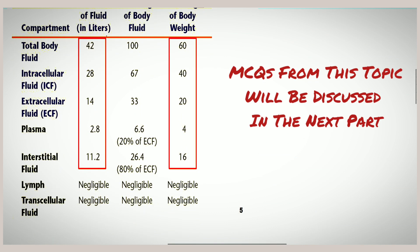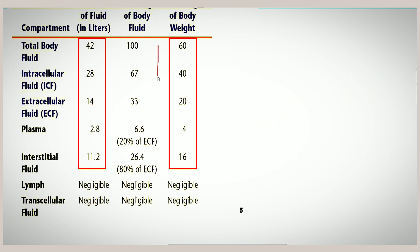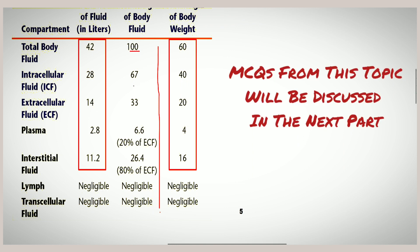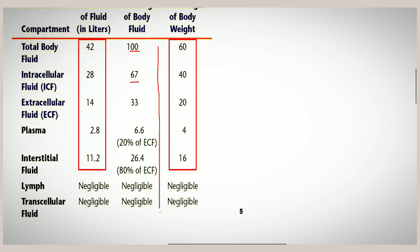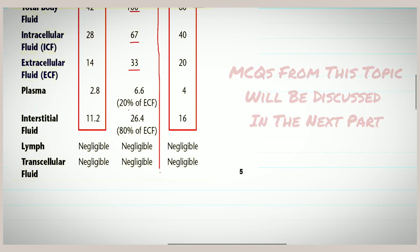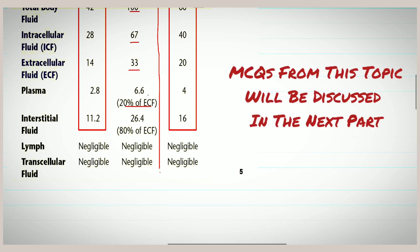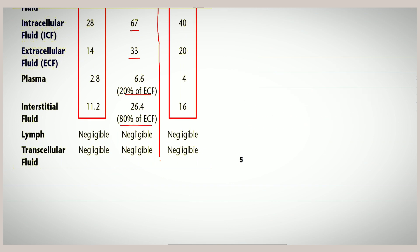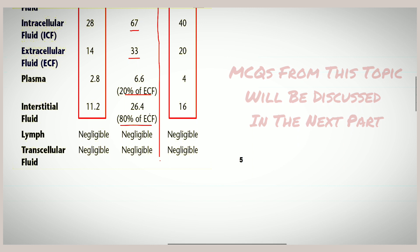Finally, remember these important percentage values for frequently asked questions: intracellular fluid is 67% (two-thirds) and extracellular fluid is 33% (one-third). Plasma volume is 20% of ECF (approximately 5% of body weight) and interstitial fluid is 80% of ECF (approximately 26.4% or 25% of body weight).